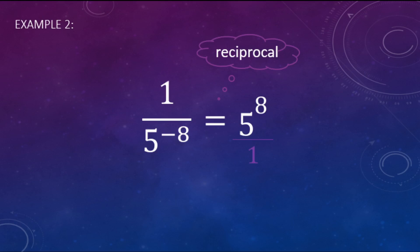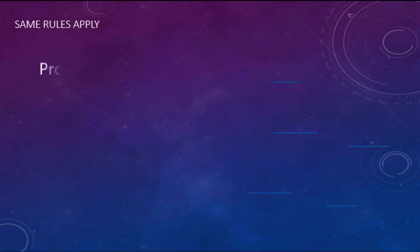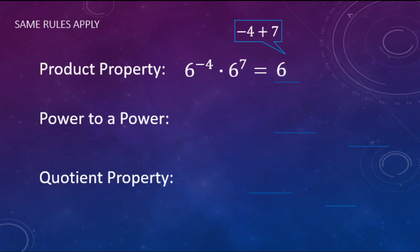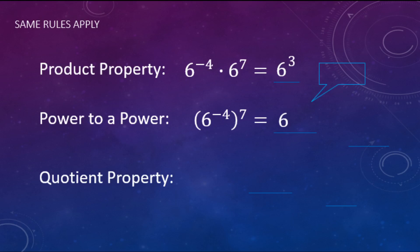This reciprocal idea works with all properties of exponents. For the product property: 6 to the negative fourth times 6 to the seventh — the base stays 6 and we add the exponents, so negative 4 plus 7 gives 6 to the positive third. For power to a power: 6 to the negative fourth, raised to the seventh — the base stays 6 and we multiply the exponents, so negative 4 times 7 gives negative 28. Rewriting with positive exponents: 1 over 6 to the twenty-eighth power.